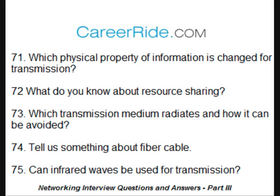Which physical property of information is changed for transmission? The current or voltage of the signal is changed for transmitting it in the form of 0s and 1s. Signals are broken into harmonics called frequency using Fourier transform. The amplitude of signals due to Fourier transform may be reduced.